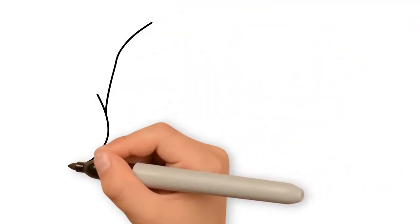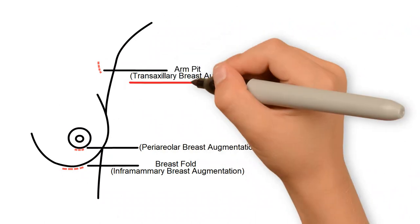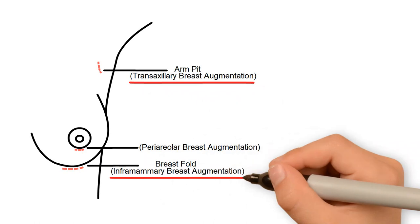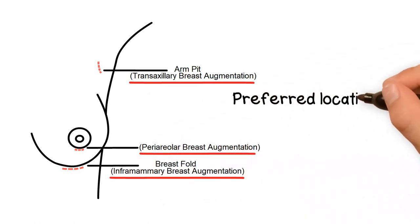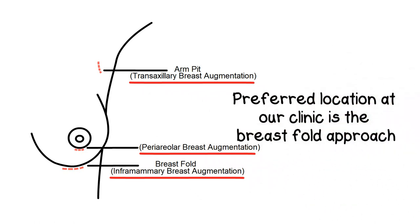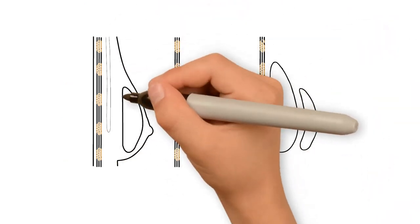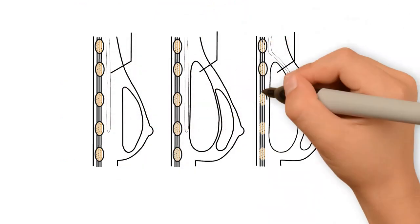There are three locations through which an implant can be inserted. This can be either through the armpit, also known as a transaxillary breast augmentation, through the breast fold, or through the areola. The preferred location at our clinic is the breast fold approach, where the implant can be positioned under the pectoral muscle without causing too much disturbance to the breast tissue. And the breast shape can be precisely controlled with natural, feminine, and symmetrical contours.